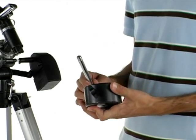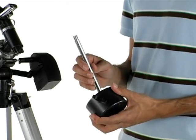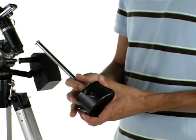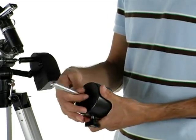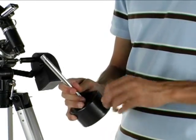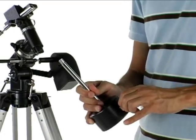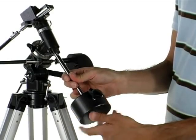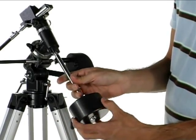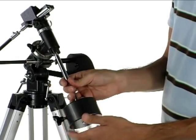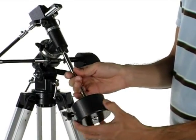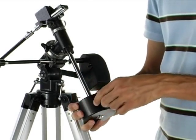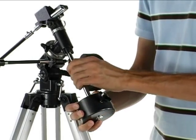Next unit we'll be connecting will be the counterweight and the bar. What you'll want to do is slide the bar through the counterweight. Don't forget to tighten it so that it doesn't slide out. And then now you'll just screw it in to the tripod mount. And then adjust it if you like. There we go.